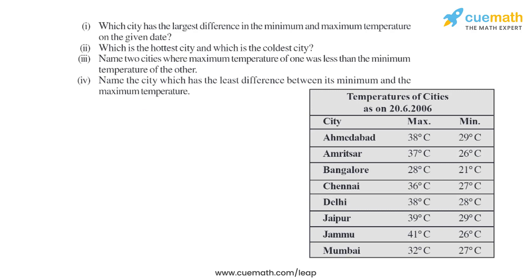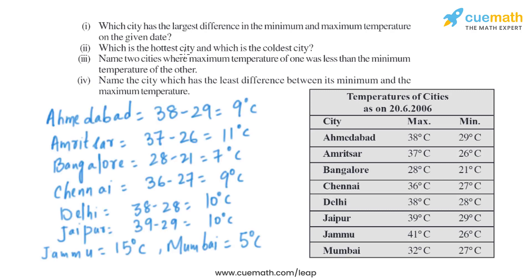Finding the difference between maximum and minimum temperature for each city: Ahmedabad 38 minus 29 equals 9, Amritsar 37 minus 26 equals 11, Bangalore 28 minus 21 equals 7, Chennai 36 minus 27 equals 9, Delhi 38 minus 28 equals 10, Jaipur 39 minus 29 equals 10, Jammu 41 minus 26 equals 15, and Mumbai 32 minus 27 equals 5 degrees Celsius.